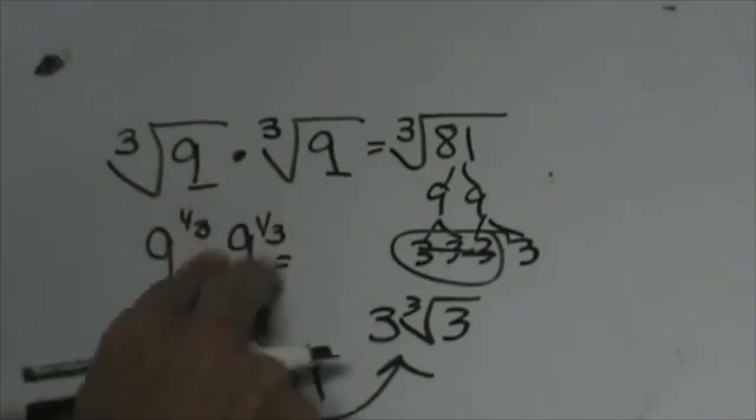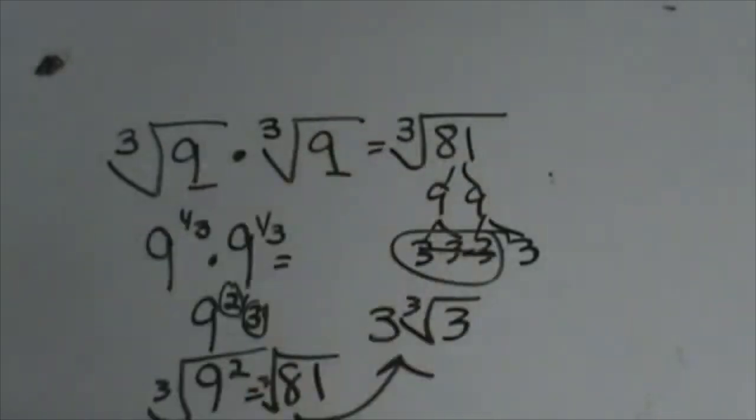So just the exponential or the rational way to look at it or the square root way to look at it. I want you to be able to see both.